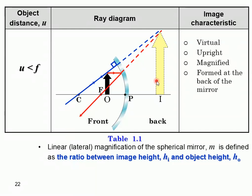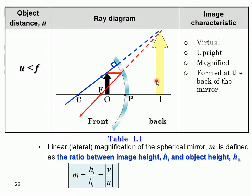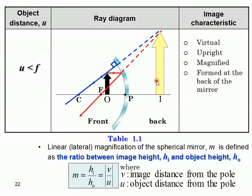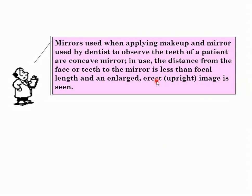Linear magnification M of a spherical mirror is defined as the ratio of image height over object height, which also equals V over U, where V is the image distance from the pole and U is the object distance from the pole. A concave mirror is used for makeup or by dentists to observe teeth — the object is placed less than the focal length, so the image is enlarged and upright.